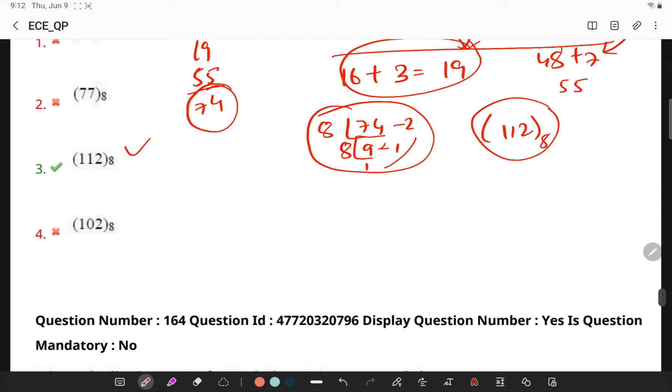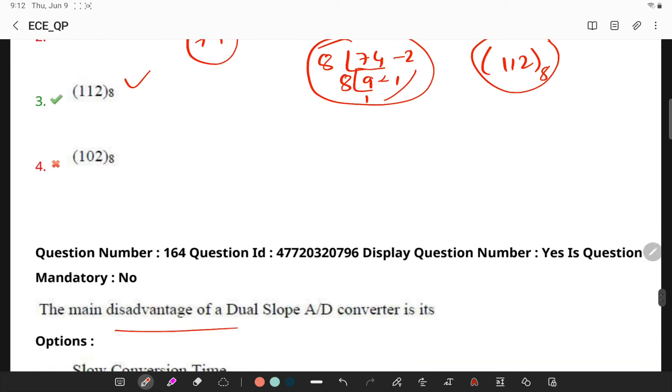Now, next question, the main disadvantage of a dual slope A to D integrator. So, if you observe dual slope, basically the main problem is slow conversion rate which is often in the range of 10 samples per second